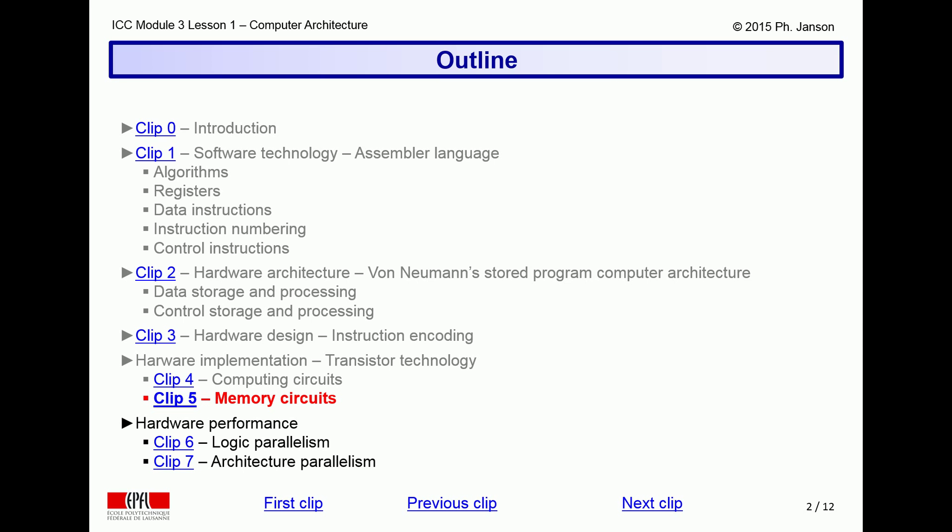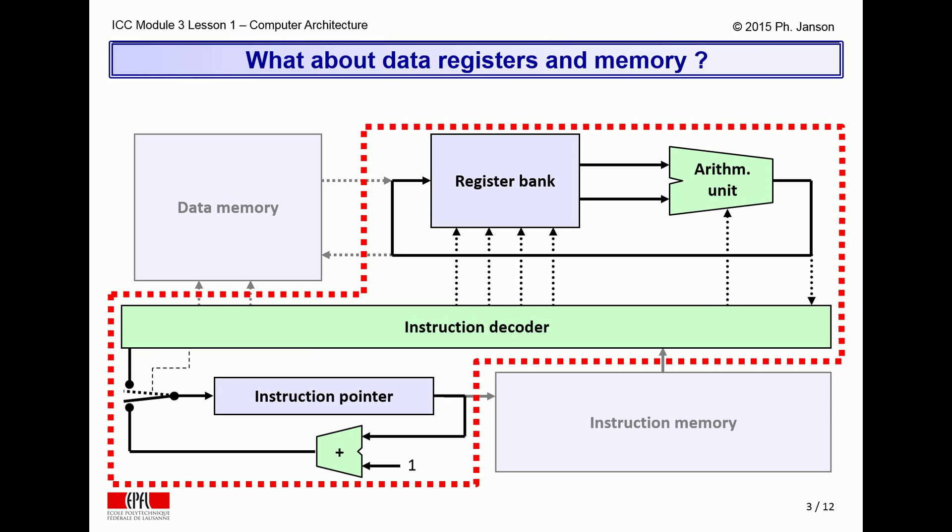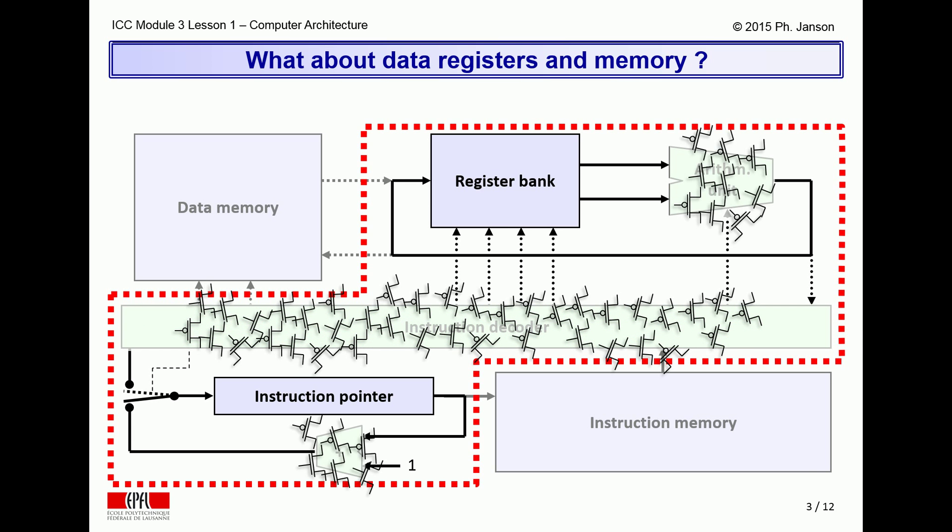The present video clip will now show how the same transistors can be used to build memory and storage circuits. On a block diagram of a von Neumann computer architecture, the previous clip showed how transistors can be used to build the three computing elements. This clip will now show that they can also be used to implement the memory and storage building blocks of this architecture.